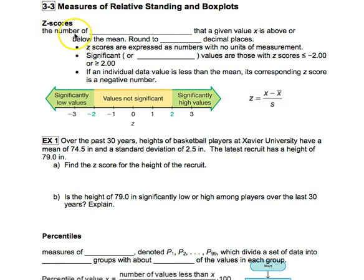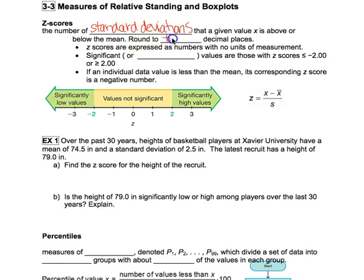A z-score by definition is the number of standard deviations that a given value x is above or below the mean. We round all z-scores to two decimal places always. Mean, median, and standard deviation we talked about rounding to one place past whatever the original data is, but z-scores we always round to two decimal places. They are expressed as numbers with no units of measurement.